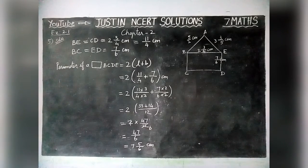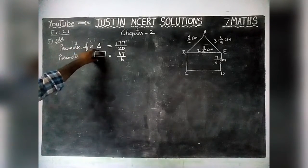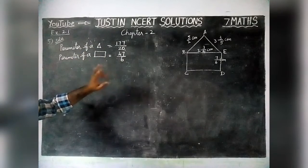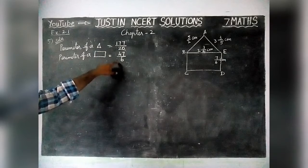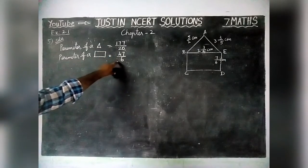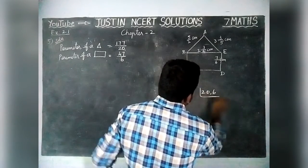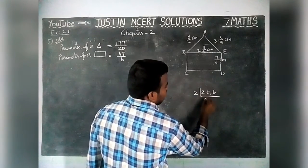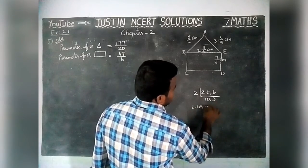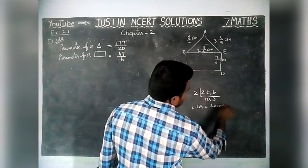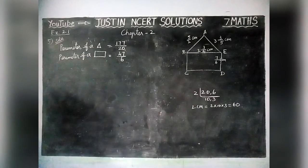Now we can find which perimeter is the greatest. After finding the perimeter of the triangle and the perimeter of the rectangle, we have to compare these two perimeters. The triangle's denominator is 20 and the rectangle's denominator is 6, so we cannot compare directly. We have to convert into like fractions by finding the LCM of 20 and 6. Dividing by common divisor 2, we get 10 and 3, so LCM equals 2 × 10 × 3 = 60.